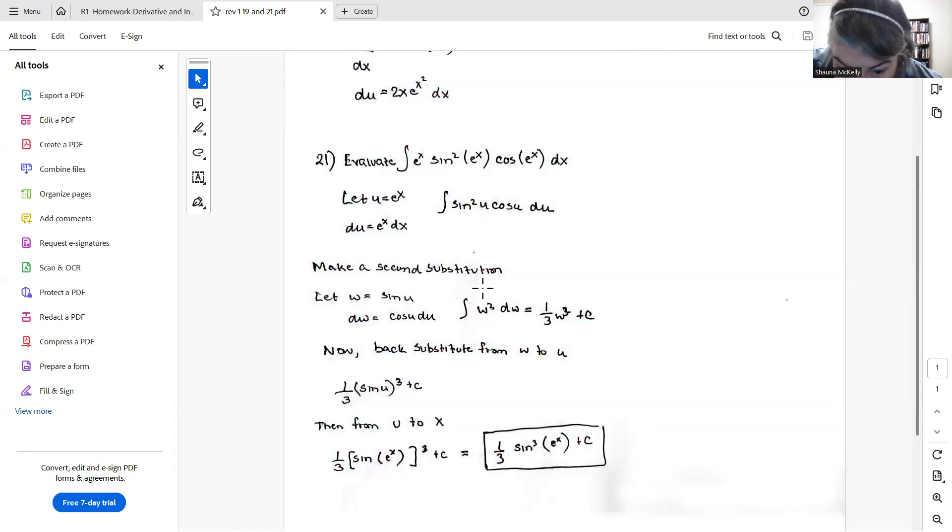Now, some of you maybe didn't substitute twice. Some of you noticed that here, if I'm integrating the cosine, the sin², that cosine is already - some of you might have seen that this is already sin²(u) du. And you could have seen that as one-third sine. But if you didn't and you needed another substitution, there it is.